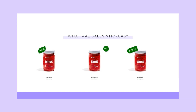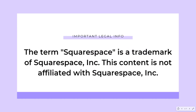This is a preview of the three we're going to go over today. We're going to add a little leaflet style, a center droplet circle thingy, and then a tag style on the far right-hand side of the screen. So these are the different sales stickers I've designed with CSS, and I'm going to walk you through how to install and customize them. Also important to note: the term Squarespace is a trademark of Squarespace Incorporated. This content is not affiliated with Squarespace Incorporated — I just love designing with the platform.